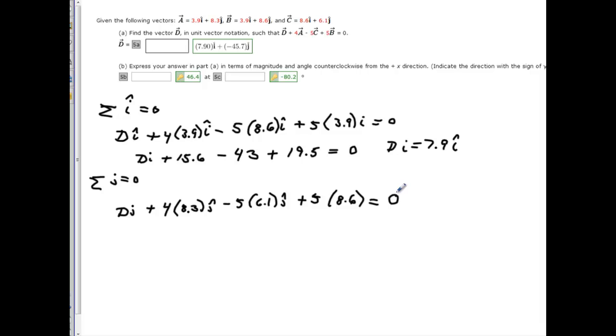So, now we do this with the calculator. 4 times 8.3, and that's going to give me D J hat plus 33.2 J hat, 5 times 6.1 minus 30.5. And 5 times 8.6 is 43. I should have put a J over here, too. Okay, we solve for that.